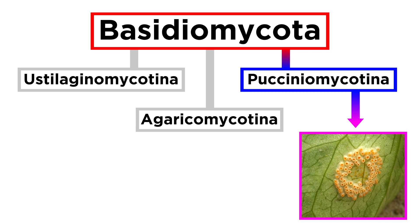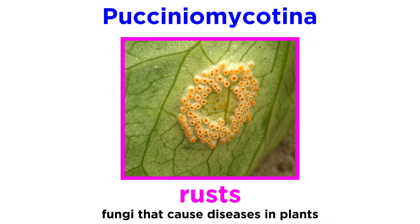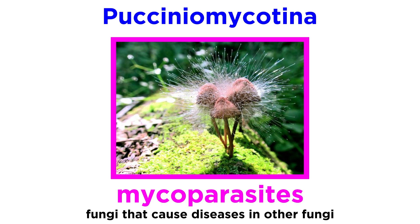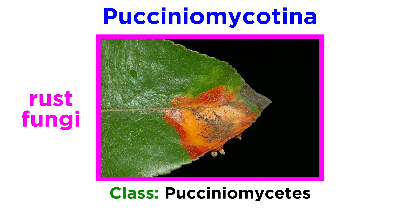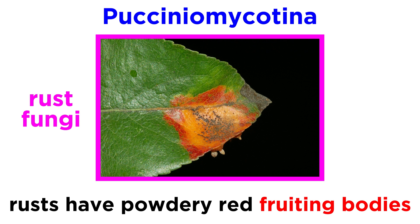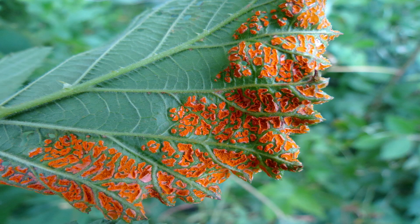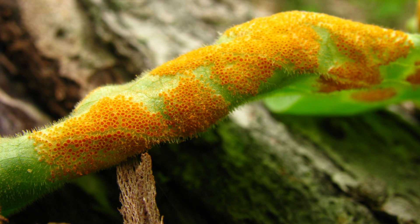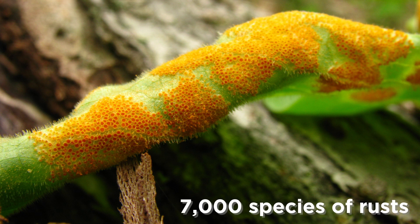Next we'll discuss the subphylum Pucciniomycotina. Most species within this subphylum are plant pathogens in the form of rusts, but many species act as parasites on mushrooms, also called mycoparasites. We'll discuss the rust fungi, which generally constitute the class Pucciniomycetes and fall into the order Pucciniales. Rusts get their name from the powdery red fruiting bodies that form on parts of plants. Wherever there are plants, there are also rusts, which can infect a diverse number of plants from a wide range of ecosystems. Many rust fungi have co-evolved with their host plants, which has led the order to become quite diverse, with about 7,000 described species.